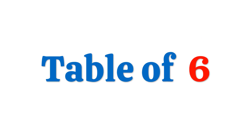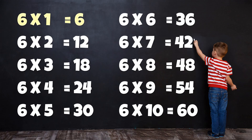Table of 6: 6 times 1 is 6, 6 times 2 is 12, 6 times 3 is 18, 6 times 4 is 24, 6 times 5 is 30, 6 times 6 is 36, 6 times 7 is 42, 6 times 8 is 48, 6 times 9 is 54, 6 times 10 is 60.